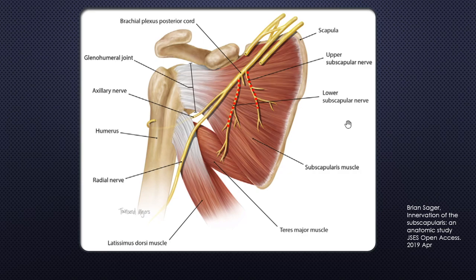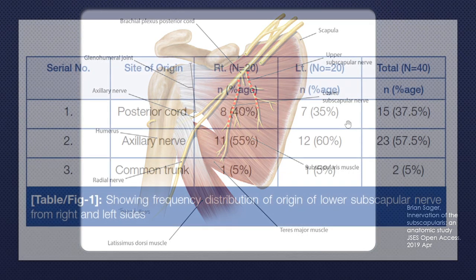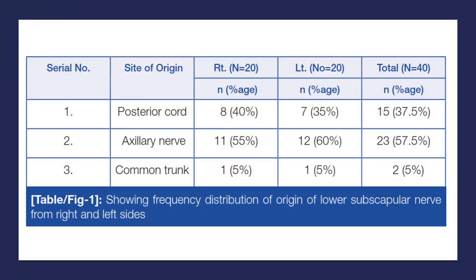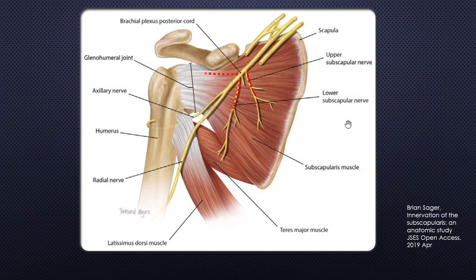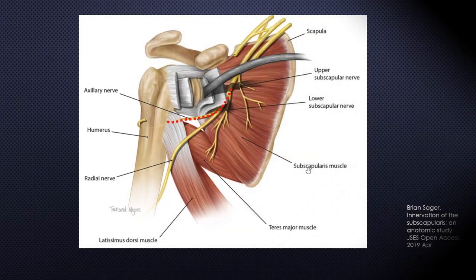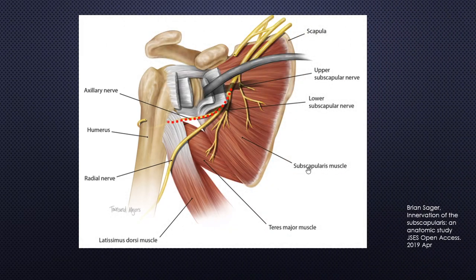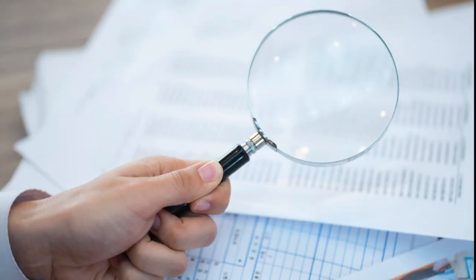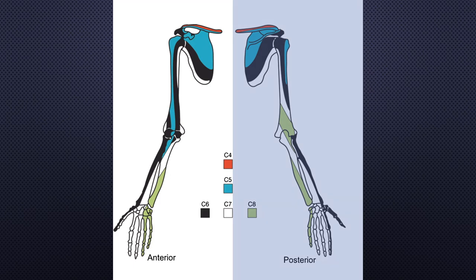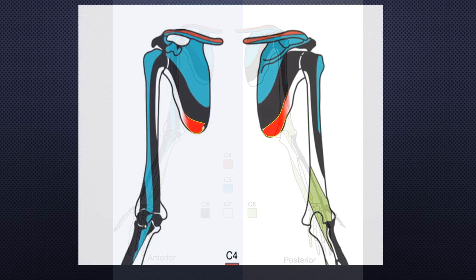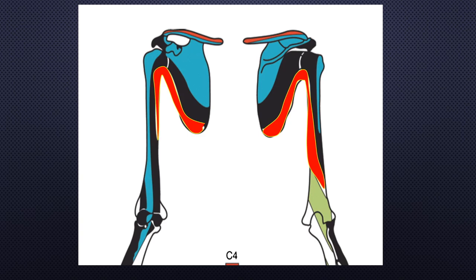The subscapular nerves are innervated by the posterior division of the brachial plexus, with some variations in lower subscapular nerve origin — it arises from the axillary nerve frequently. The subscapular nerves supply the anterior portion of the glenohumeral joint and subscapular muscle. The axillary nerve originates from the upper trunk, posterior division, posterior cord, and carries nerve fibers from C5 and C6. According to my clinical observation, my patients felt pain when I failed to block the C7 nerve. This illustration of the sclerotome of the upper extremity shows the C7 contribution to the inferior aspect of the scapula and humerus.